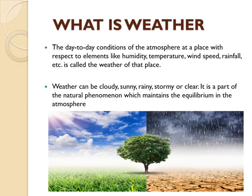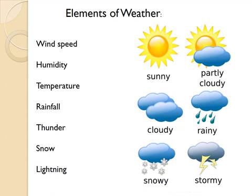Now, there are certain elements of weather. Elements of the weather are wind speed, humidity, temperature, rainfall, thunder, snow and lightning. These are all the things which we can see outside our surroundings when weather is hot, when there is a wind blowing.